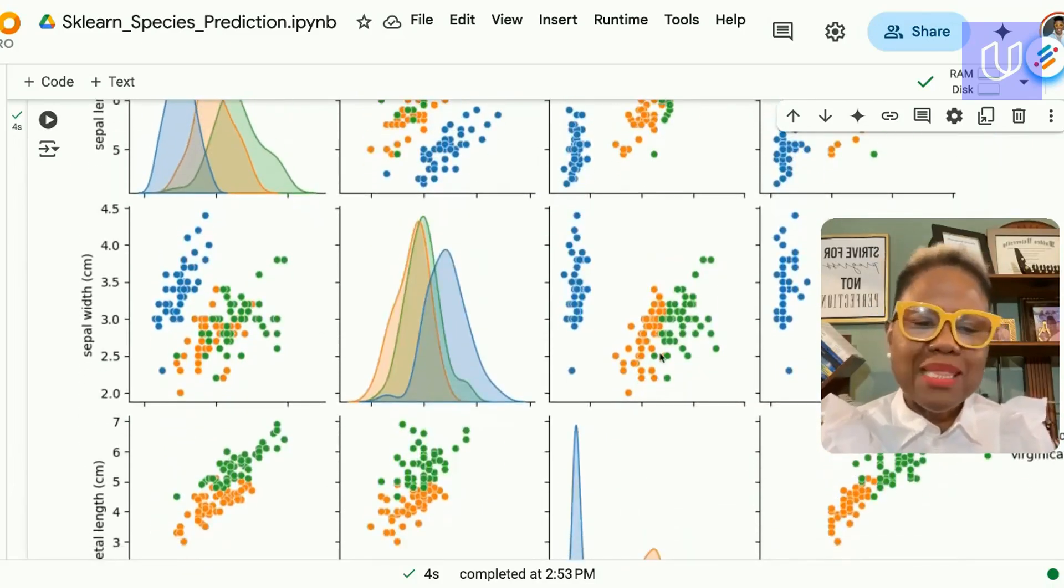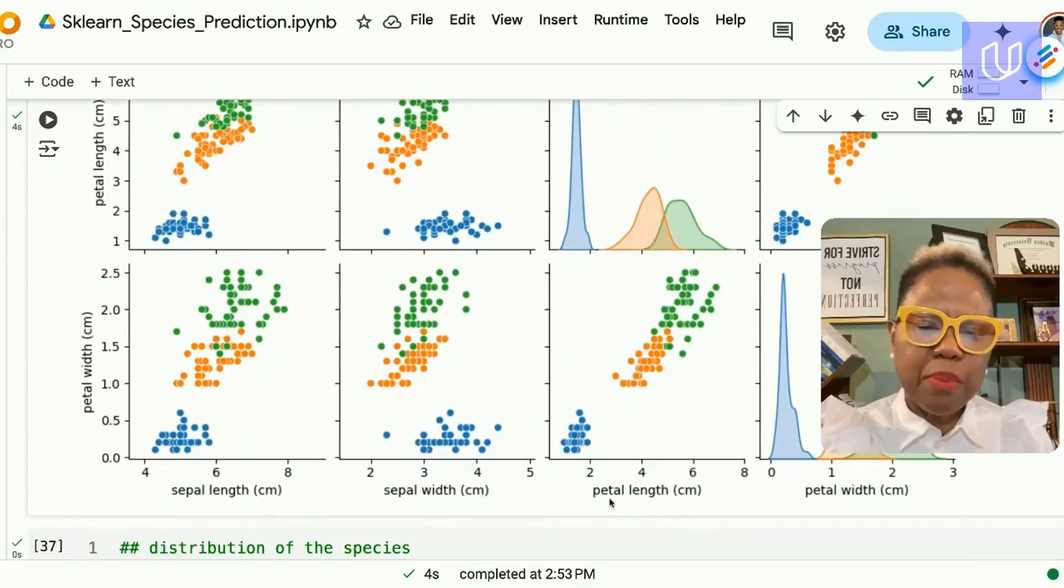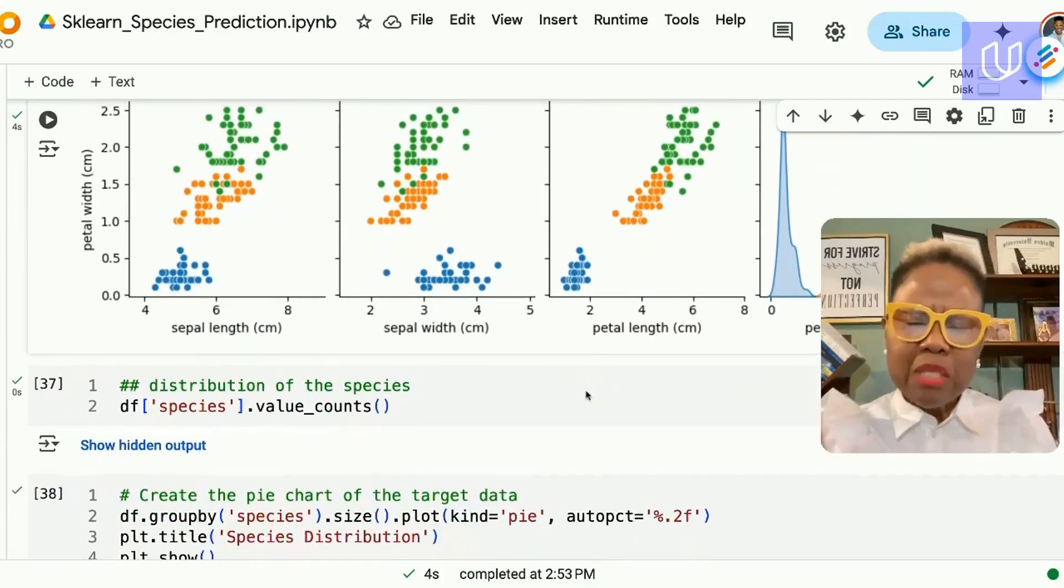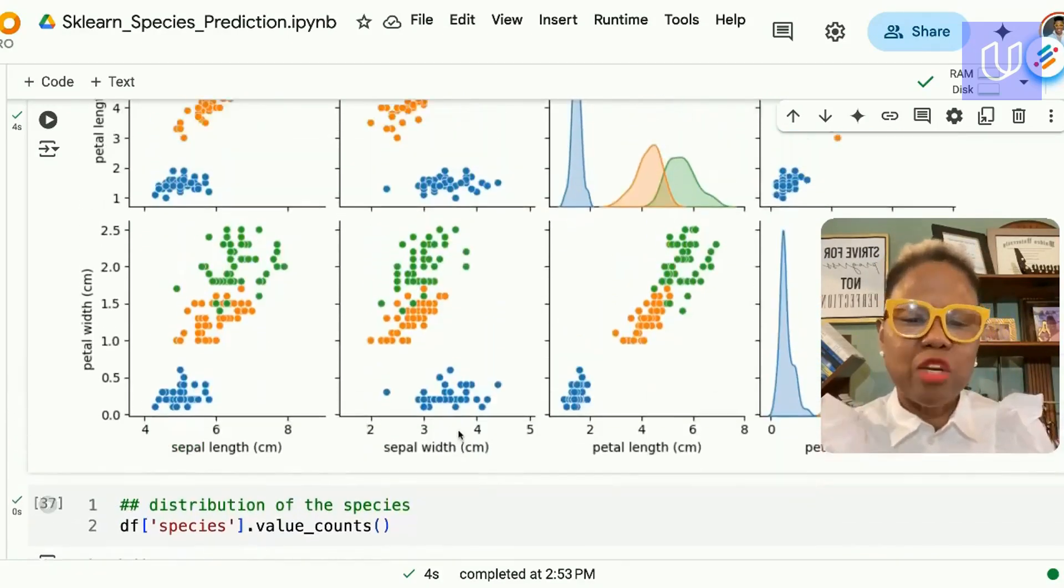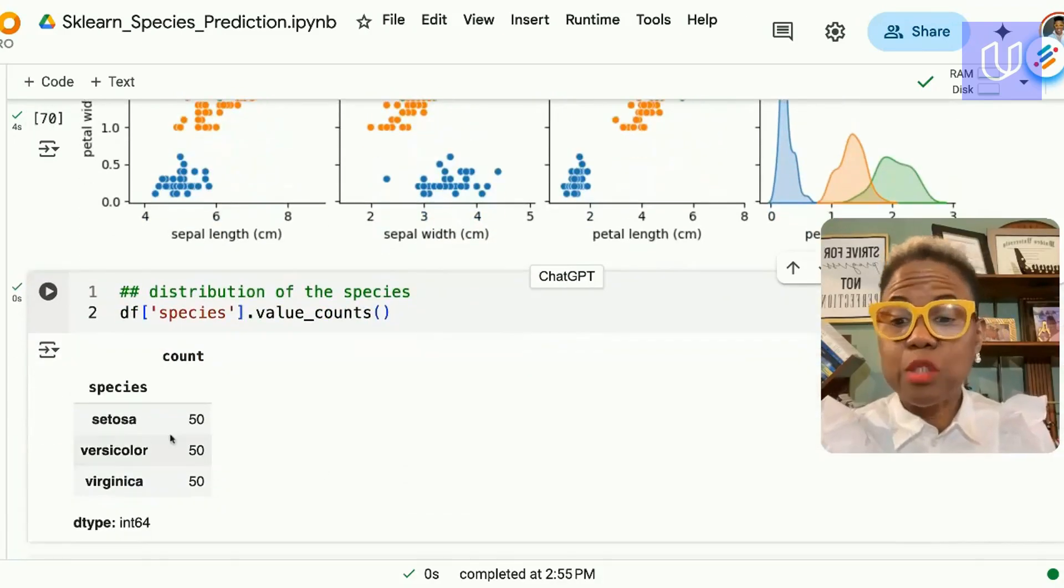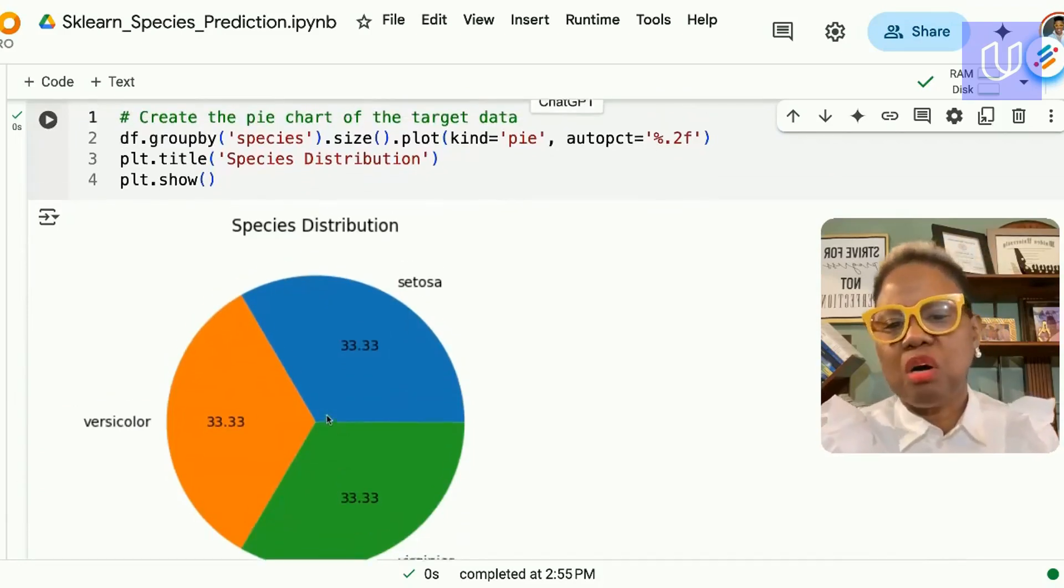We can also see whether there is any kind of relationship between the features for example the petal length and the petal width there is a strong correlation between those two features. So that gives us some idea of the patterns that are in the dataset. Looking specifically at the target value now we can do a value count or a pie chart to show us that yes there is an equal distribution of the values.